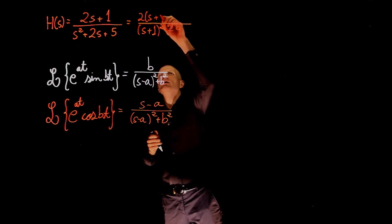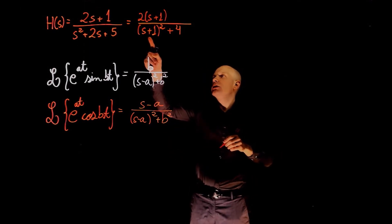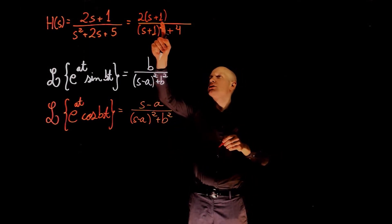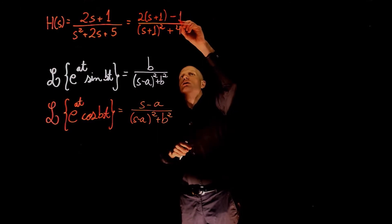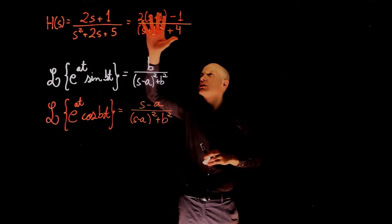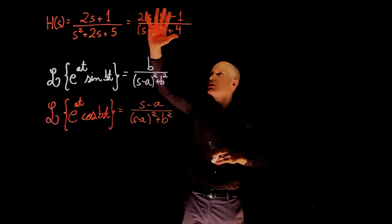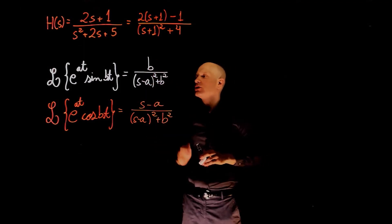By doing 2 times s plus 1, we have the term that we need here, which is the same as the denominator, but this now gives 2s plus 2. So if you subtract 1, we go back to the original formulation. So again, this equation and these equations are exactly the same, but the advantage is that this one now will fall into one of these two categories.